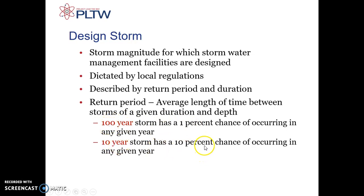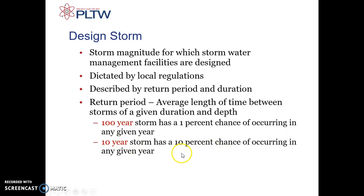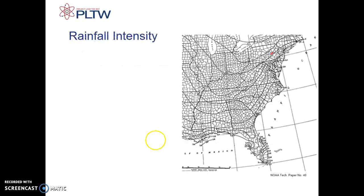The 100-year and 10-year labels don't mean you'll have a huge storm every 100 or 10 years — it just means there's a 1% or 10% chance of it occurring in any given year. A 50-year storm would have a 5% chance of occurring in any given year.